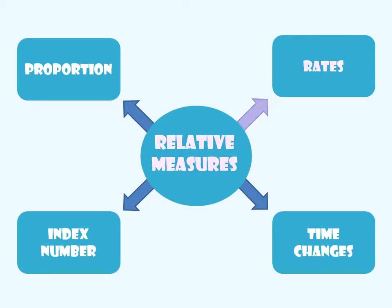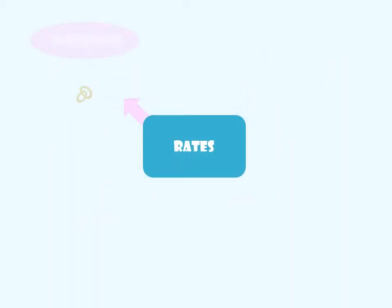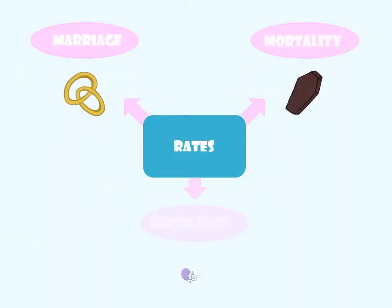Rates indicate a frequency with which something occurs over a period of time in an area. The better known ones are marriage, mortality, and birth rate. Let's take a closer look at the last one.